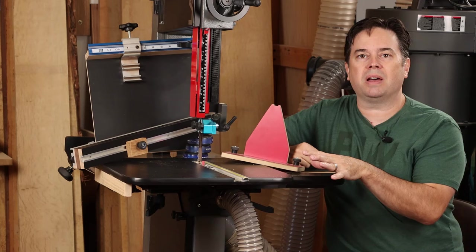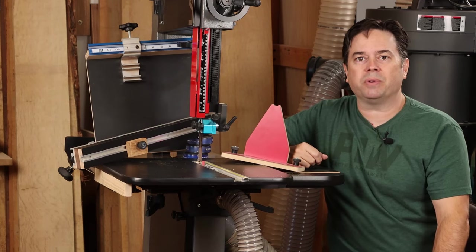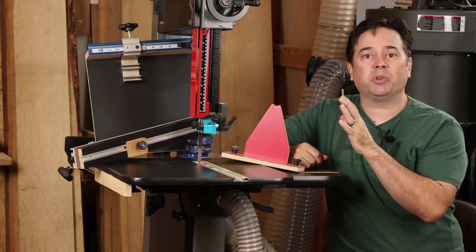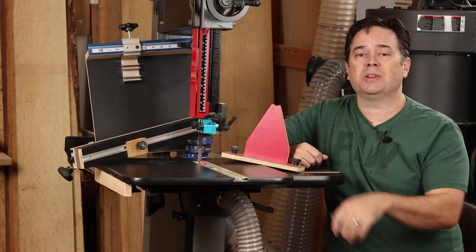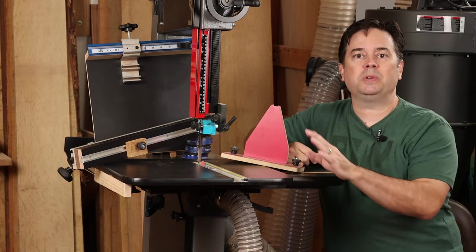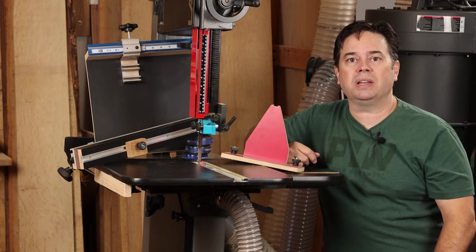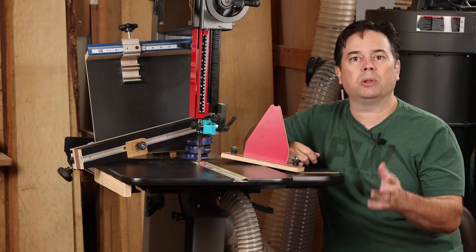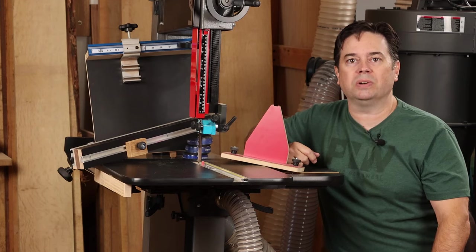But if you've just got a bandsaw that's stock straight the way you bought it from the factory, these are some great ideas of add-ons that you can do to your bandsaw to make it so much more useful. The first one we'll look at is a circle-cutting jig, and just with a few bits of hardware from your local woodworking store, you'll be able to easily build one too.